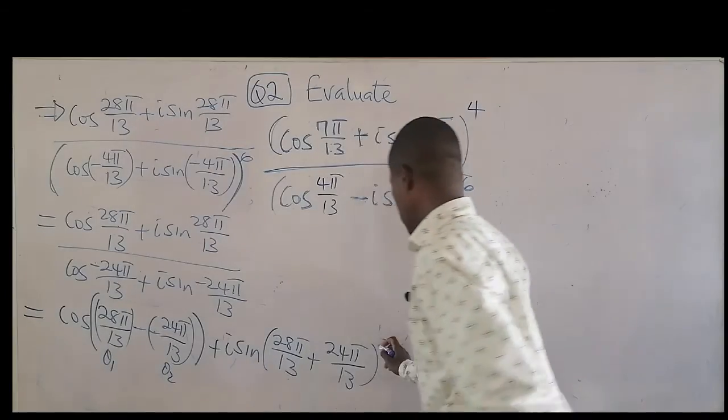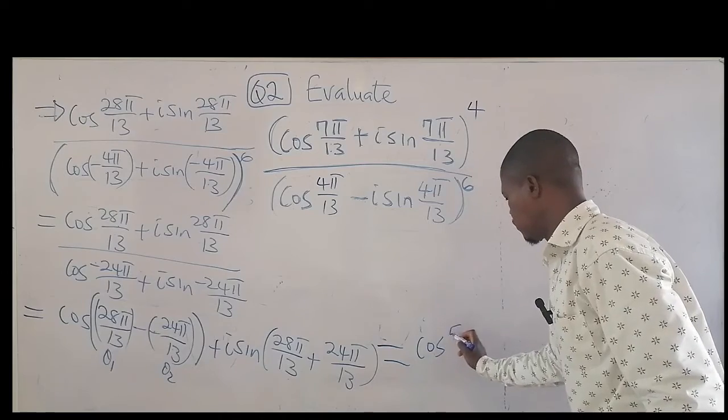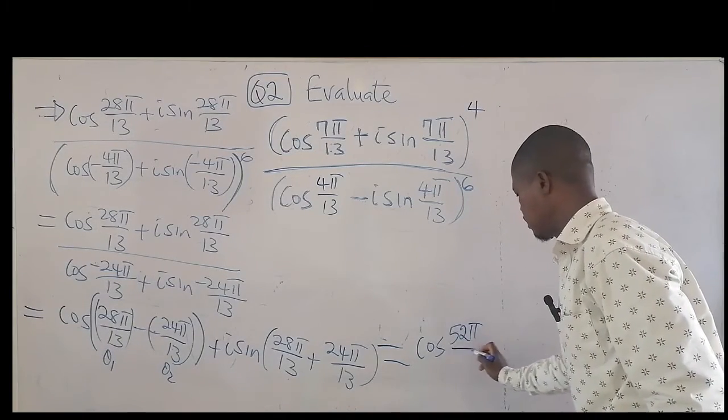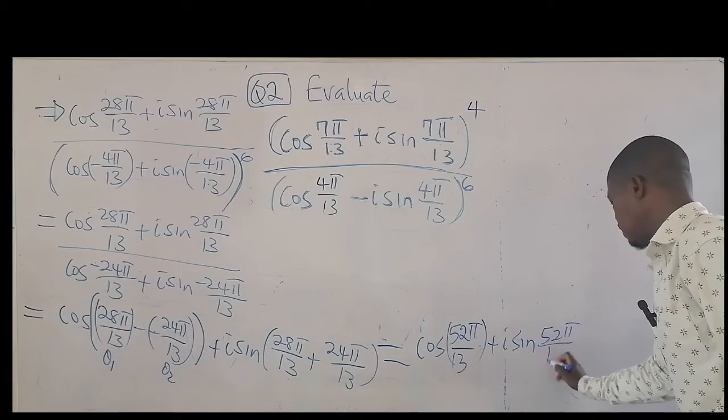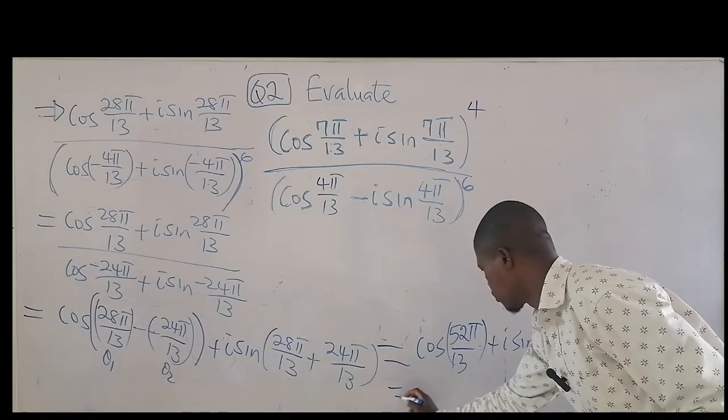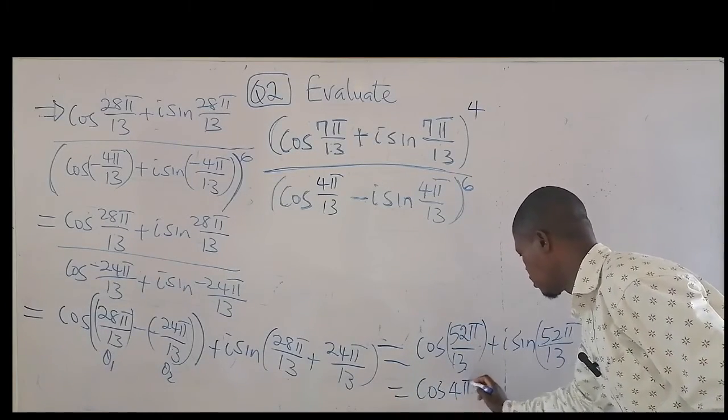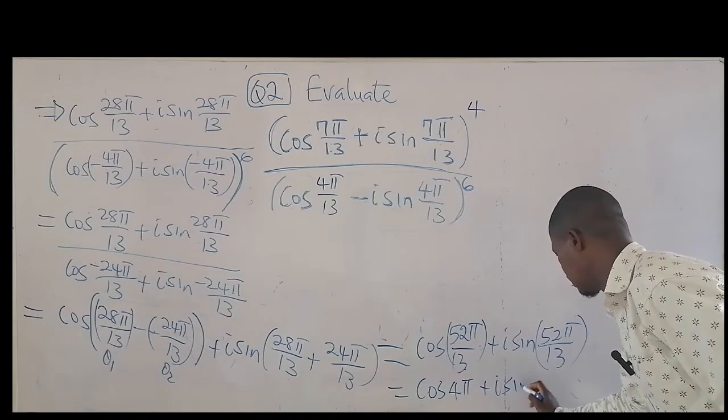In perfect form, the final combination is cosine 62 pi over 13 plus i sine 62 pi over 13. This will give us cosine 62 pi over 13 plus i sine 4 pi.